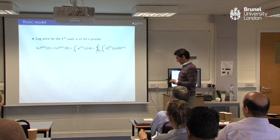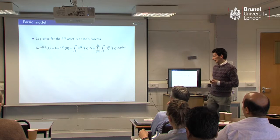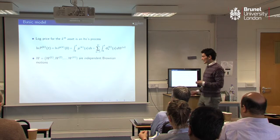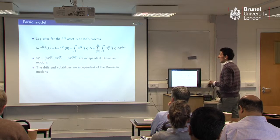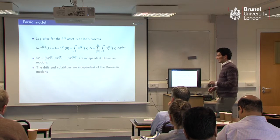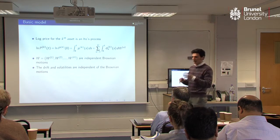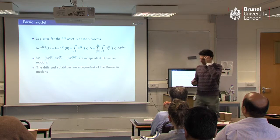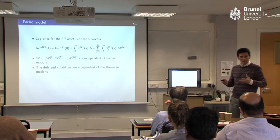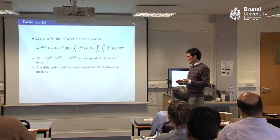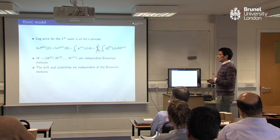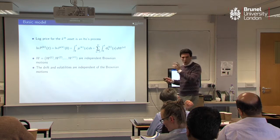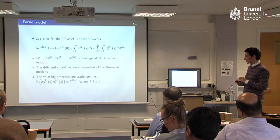Let me start by introducing a very simple model to set up ideas and derive simple but hopefully useful results. I have a log price for the kth asset — it is essentially an Itô process. These terms here are independent Brownian motions, and the drift and volatilities are independent of the Brownian motions. I'm disregarding any leverage effects, even though in FX it becomes a bit different than how you would interpret these things for stocks.